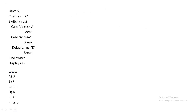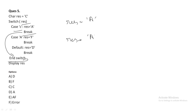Next question: char res = 'c', switch(res). Case 'c' is matched, so result is assigned 'a', then break. Control comes out of the switch block and displays result. The result is displayed as 'a', so the correct answer is 'a'.